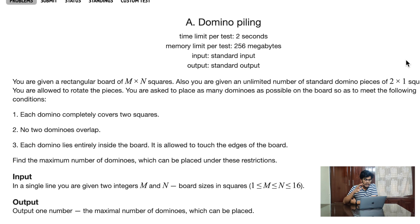You're given an unlimited number of standard domino pieces, and you're allowed to rotate the pieces or place them straight. You're asked to place as many dominoes as possible meeting the following conditions: each domino completely covers two squares, no two dominoes overlap, and each domino lies inside the board — you're not allowed to touch the edges.